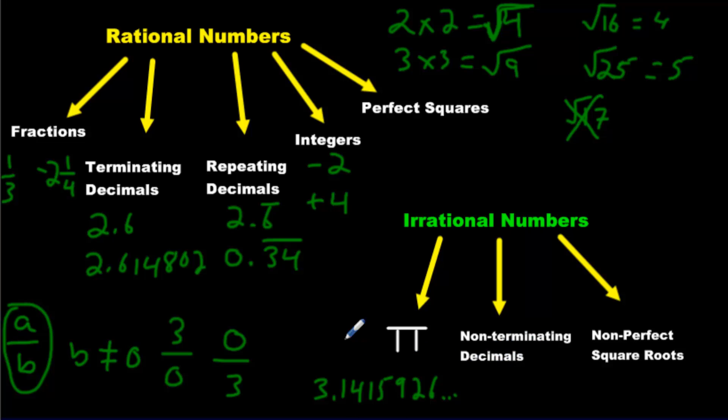Non-terminating decimals, pi is an example of one, but we have other ones too. For instance, non-perfect square numbers. Non-perfect squares like root 17. You punch that in your calculator, you're going to get digits that go forever and ever and ever and ever. It'll keep going for all of eternity. Now your calculator will end it.